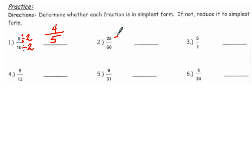25 sixtieths. What's the biggest thing that goes into both 25 and 60? What is their greatest common factor? And it's 5. 25 divided by 5 is 5. 60 divided by 5 is 12. Look again to make sure you haven't missed anything. And your answer is 5 twelfths.